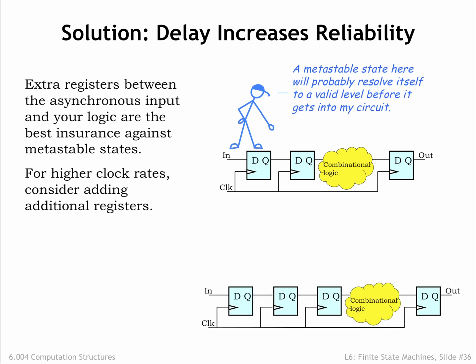What happens if our clock period is short but we want a long quarantine time? We can use multiple quarantine registers in series. It's the total delay between when the first register goes metastable and when the synchronized input is used by the internal logic that determines the failure probability.